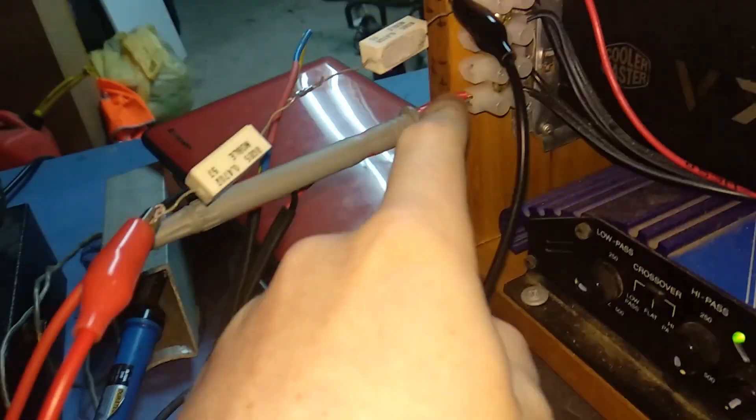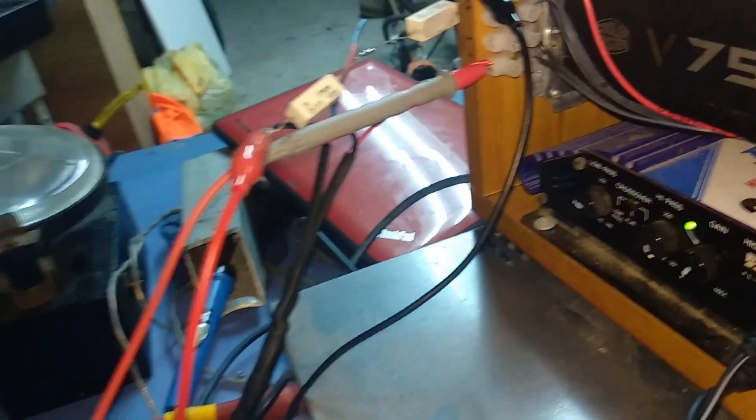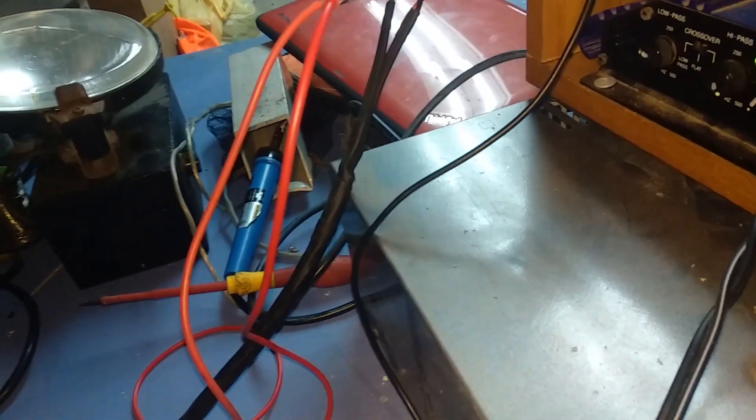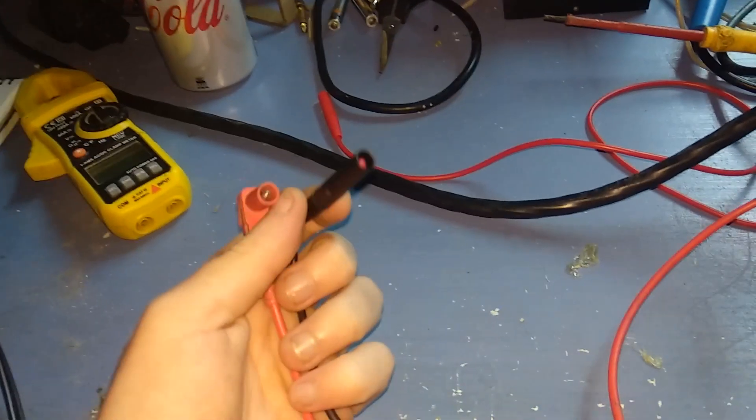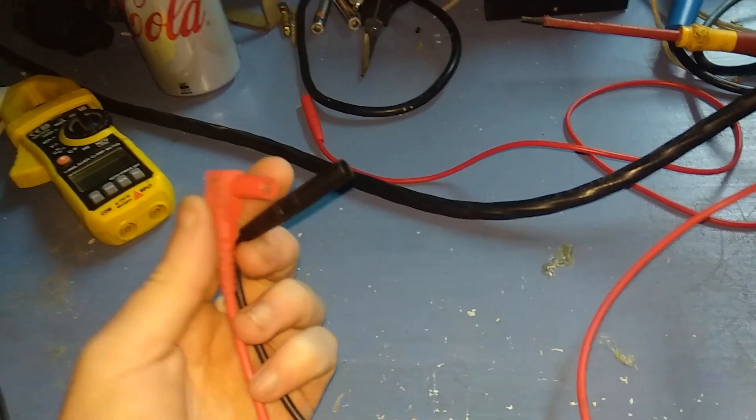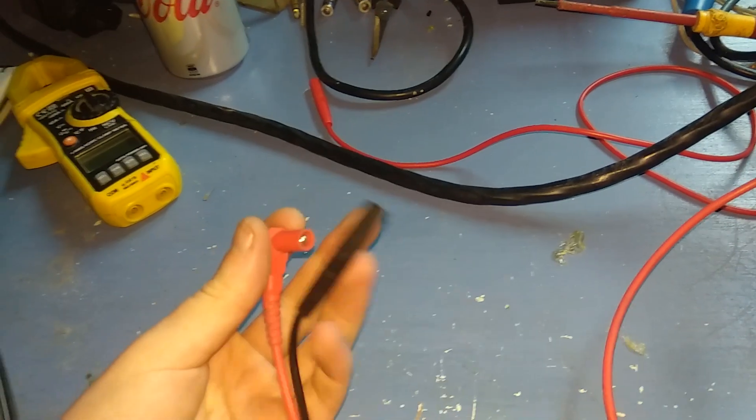Now you can also see the red probe there and here's the black one. Now they measure the voltage across the entire circuit, the amount of voltage the amplifier is putting out, so if I measure the voltage between these two I'll be able to see the total voltage the amplifier is putting out.